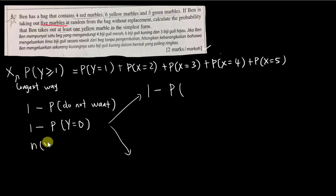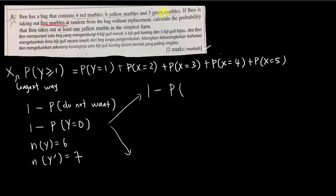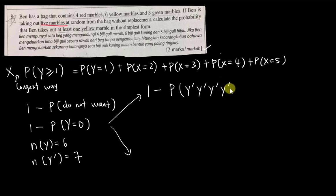I will not separate marbles into red, yellow, and green — instead I'll call them yellow and non-yellow. Number of yellow: six. Number of non-yellow: four red plus three green equals seven. If I do not want any yellow marble, I make sure all five selected marbles are non-yellow.